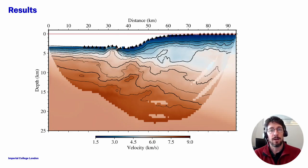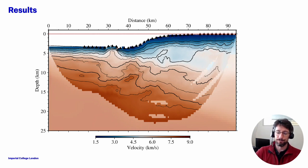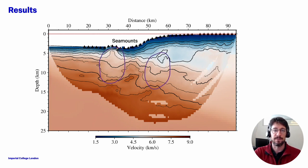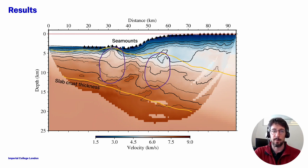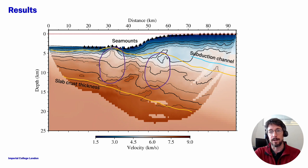These are our results. This is our preferred final model and we'll be focusing on a few features here. First we'll look at the seamounts, then we'll look at the properties of the incoming plate crust — particularly the slab crust thickness — and then we'll look at the subduction interface and particularly the subduction channel in the source region of the Padernales earthquake.